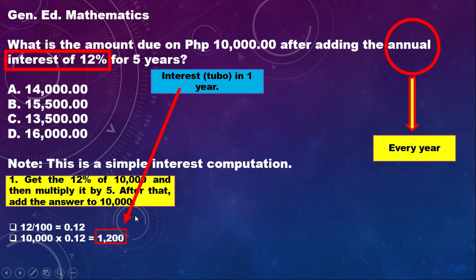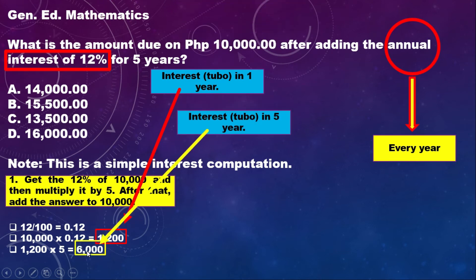That is the 12% annual interest of 10,000. But since you will pay back the 10,000 within 5 years, multiply the 1,200 by 5. So that is 6,000. This 6,000 is the interest or tubo of 10,000 for 5 years.